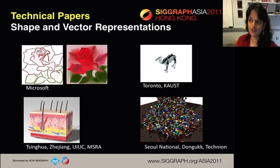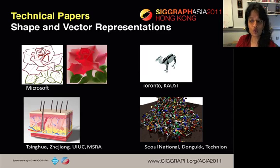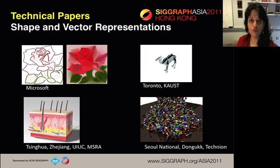In the session called Shape and Vector Representations, we have an expressive authoring system for vector graphics design using thin plate splines for higher-order fairing. An automatic algorithm to produce abstractions of objects based on planar slices. A new paper that introduces a multi-scale representation of volume data. And an approach that introduces compact bounding volume hierarchies for free-form geometric models.